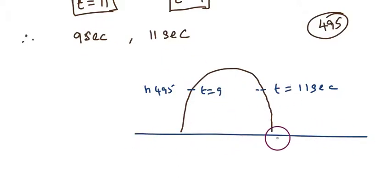If you look at the parabola, this is possible. If you have two answers, 9 seconds gives 495 feet. So the answer is 9 seconds and 11 seconds.